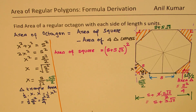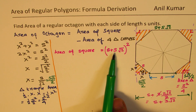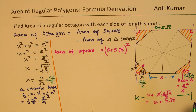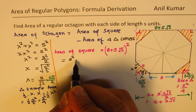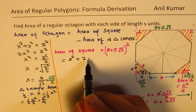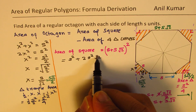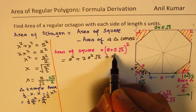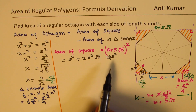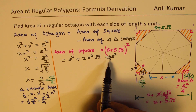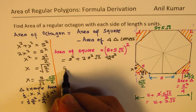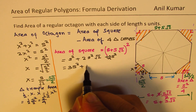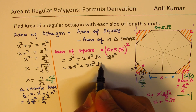Therefore, the area of this square is (s + s√2)². Let's expand this: we get s², plus 2 times the product of these two, which is 2s²√2, plus the square of s√2, which is 2s². Combining these terms, we get 3s² + 2s²√2.